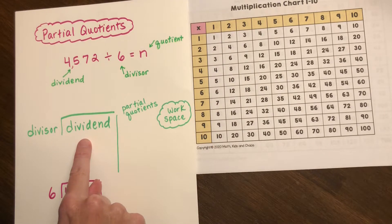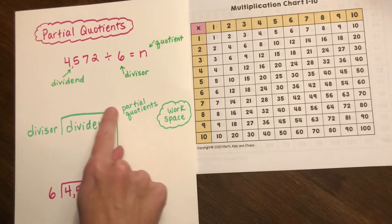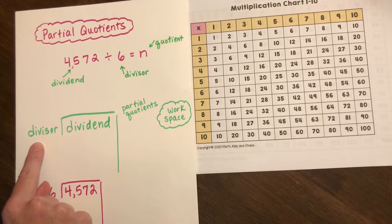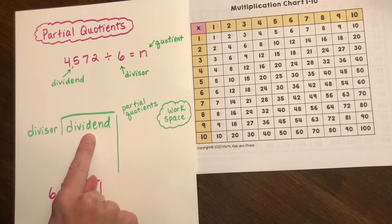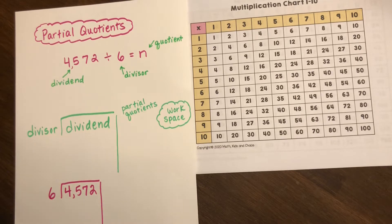So your dividend goes inside the box kind of like your array, so it's the number we are dividing. I typically write dividend and say divided by the divisor. So this is the number we are dividing into the number of groups based on the divisor.